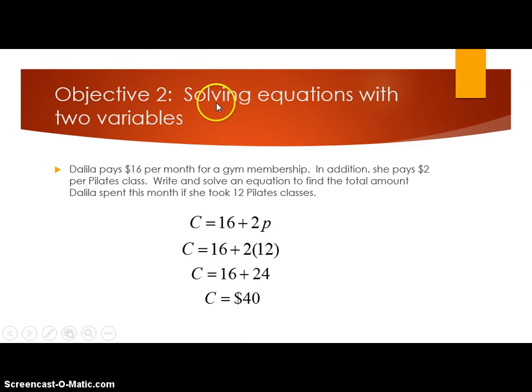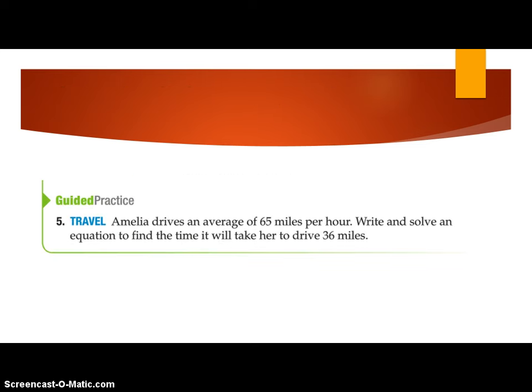So that's example five, solving an equation with two variables. Now, again, pause the video and try this. This is going to look very similar to some of the physics problems we've been working on. So Amelia drives an average of 65 miles per hour. Write and solve an equation to find the time it will take for her to drive 36 miles. So think about what that equation might look like.